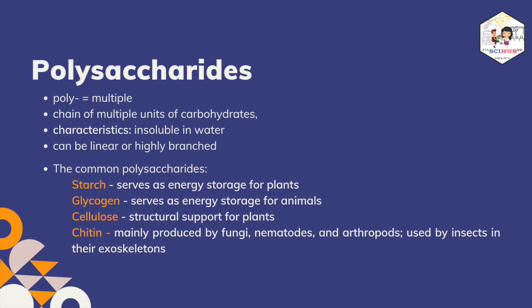The last classification of carbohydrates based on their structure are the polysaccharides. Poly meaning multiple, polysaccharides are chains and branches of different or the same monosaccharides, ranging from ten to hundreds and even thousands of units of monosaccharides linked together. Since they are large and heavily branched compounds, polysaccharides are mostly insoluble in water and are tasteless and odorless. There are four common polysaccharides we will consider for this module, classified as storage polysaccharides and structural polysaccharides. Starch and glycogen fall under storage polysaccharides, while cellulose and chitin are considered structural polysaccharides.